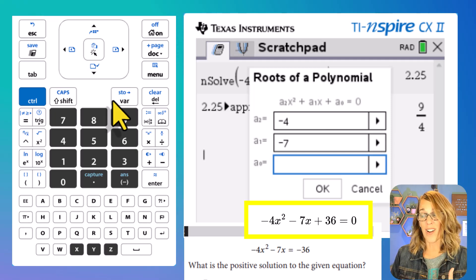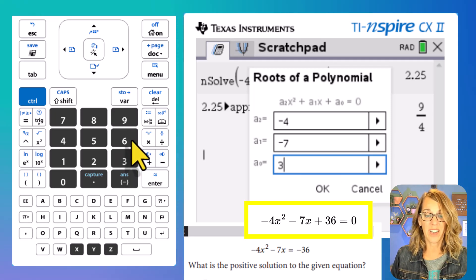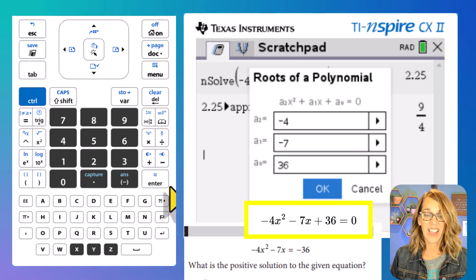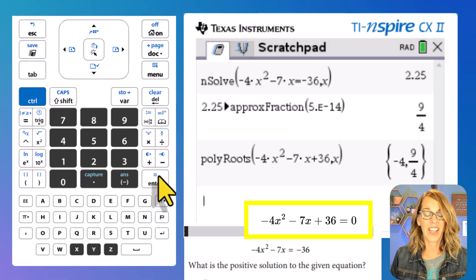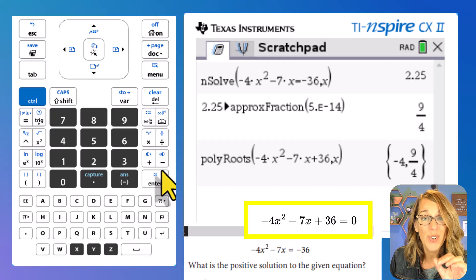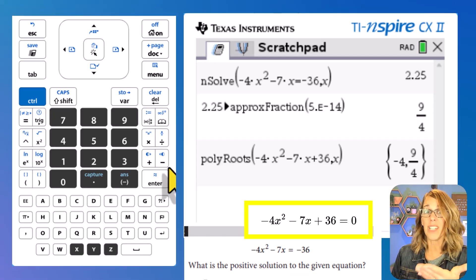A sub zero is my constant term. Having moved that over, it is a 36. Let's go ahead and tab down to OK, hit enter, and then enter again. There are my two solutions and I think it was even quicker.